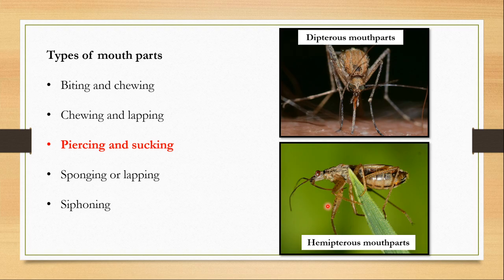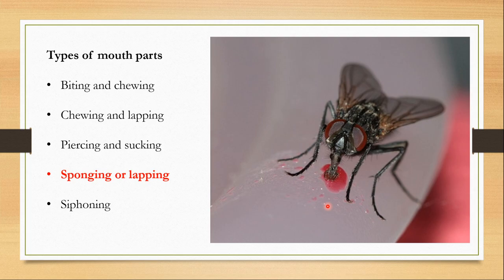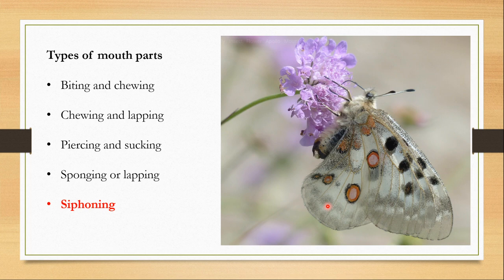Then I will talk about the sponging or lapping type of mouthparts, which are used by dipteran insects like blowflies, houseflies, and fruit flies to draw liquid from a flat surface. Then I will talk about the siphoning mouthparts, which work like a straw and are found in adult moths and butterflies. Please remember that although I am going to talk about only five types of mouthparts, there are many other types which specialize other insects to feed on special types of food.